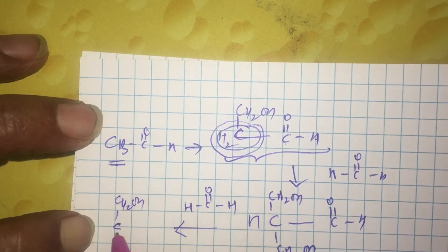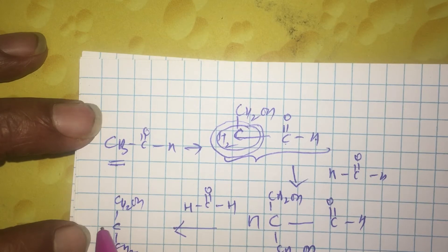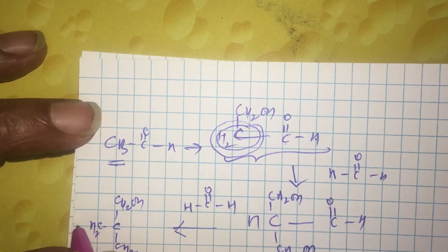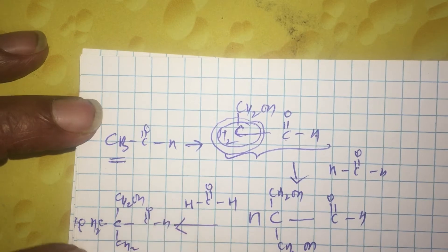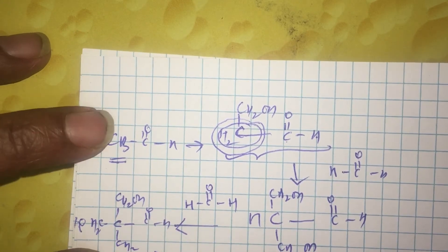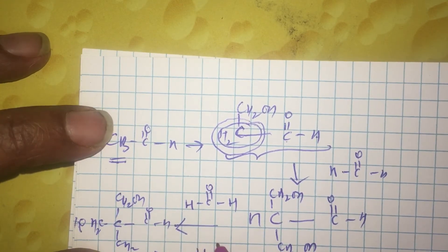This again continues with one more molecule of formaldehyde to convert all the three hydrogens of acetaldehyde into CH2OH groups. CH2OH, CH2OH, CH2OH and of course CHO.